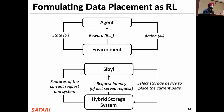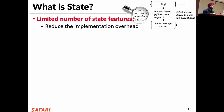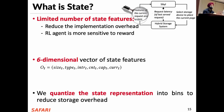We will now concretely define the state, action, and reward for Sybil. For the state, we use a limited number of state features after performing feature selection — first to reduce implementation overhead, and second because the RL agent is more sensitive towards the reward, so adding more states doesn't really help. We choose a six-dimensional vector of state features including, for example, the size of requests and the type of requests. We also quantize the state representation into small bins to reduce state overhead.